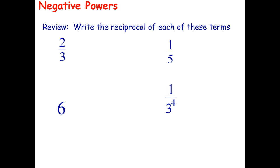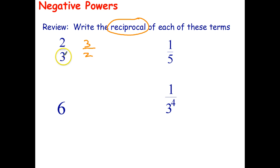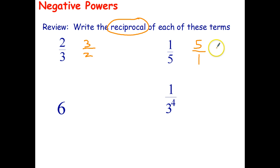Before we can do that we need to do a quick review of the reciprocal of a number. So 2 over 3 — the reciprocal of that is just 3 over 2. In other words we swap the numerators and denominators. Sometimes we just say we flip the fraction over. 1 over 5: if we flip the fraction over then that becomes 5 over 1, and of course anything divided by 1 is just itself, so that becomes 5.